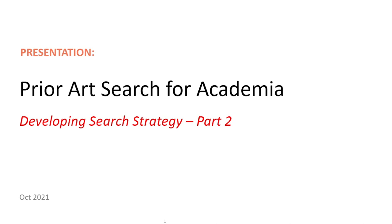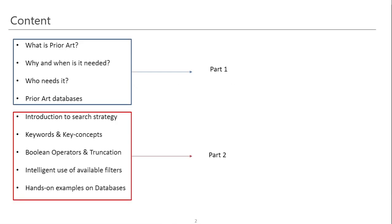Hello, this is Part 2 of the Prior Art Search for Academia module. In the first part, we discussed what Prior Art is, why and when it is needed, who needs it, and various types of Prior Art databases available in the market freely and publicly. Now, in Part 2, we will discuss how to develop a search strategy over these databases.